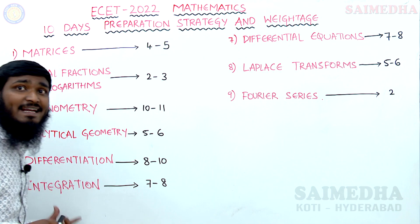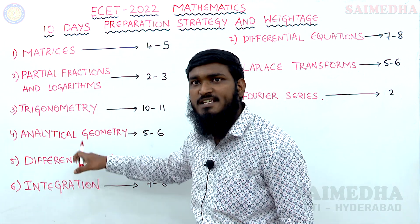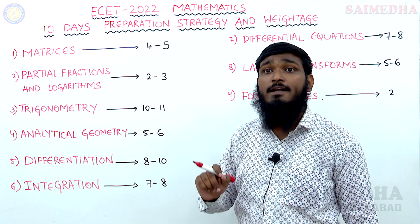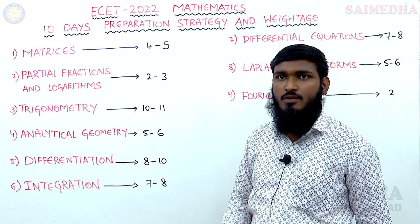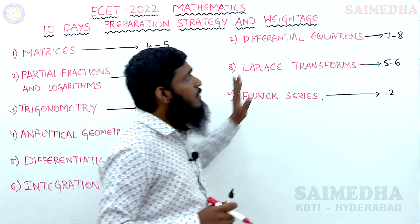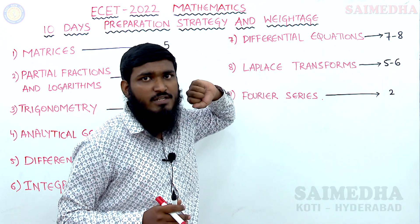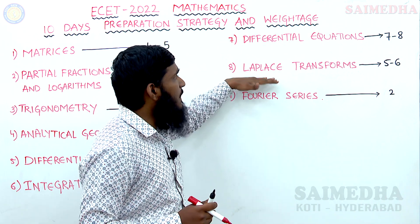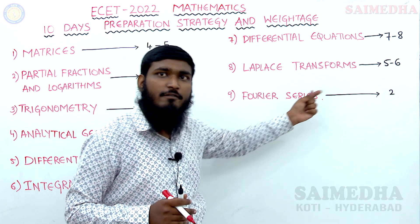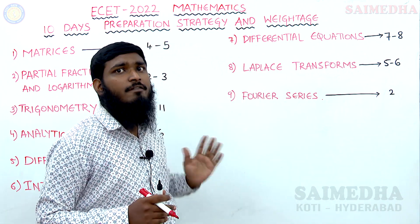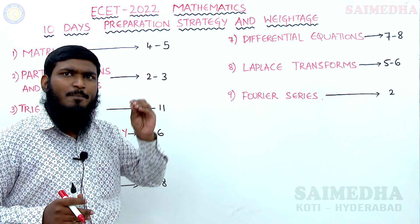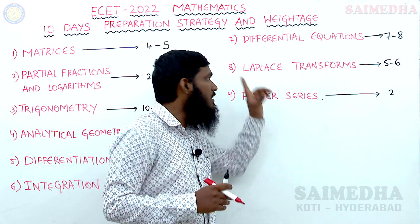Next is Integration, which carries 7 to 8 marks — minimum 7 and maximum 8. If you are strong in Differentiation, you can easily solve Integration problems as well. After Integration, Differential Equations gives 7 to 8 questions, and Laplace Transforms gives 5 to 6 questions. Finally, Fourier Series — based on analysis of all previous question papers, it compulsorily gives 2 questions, though sometimes only 1 question appears.